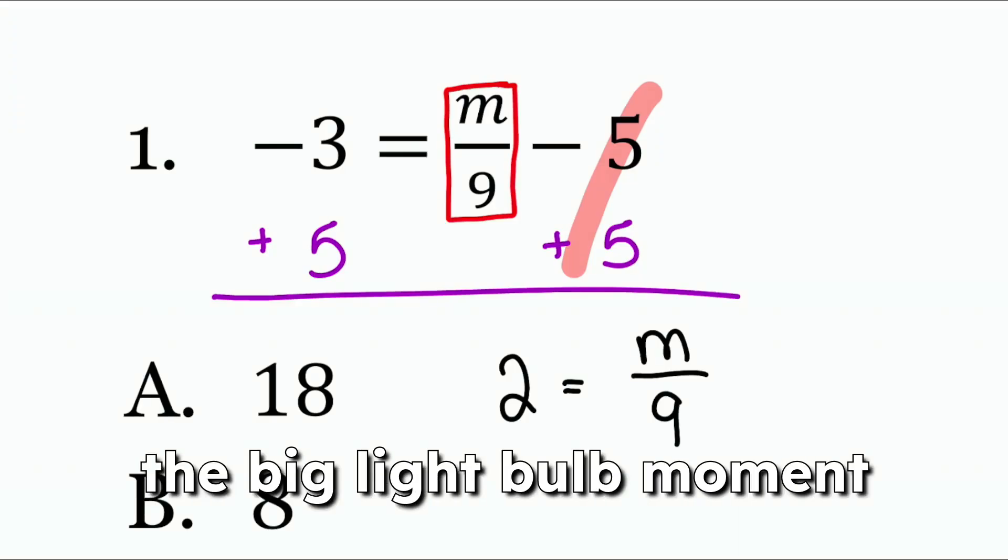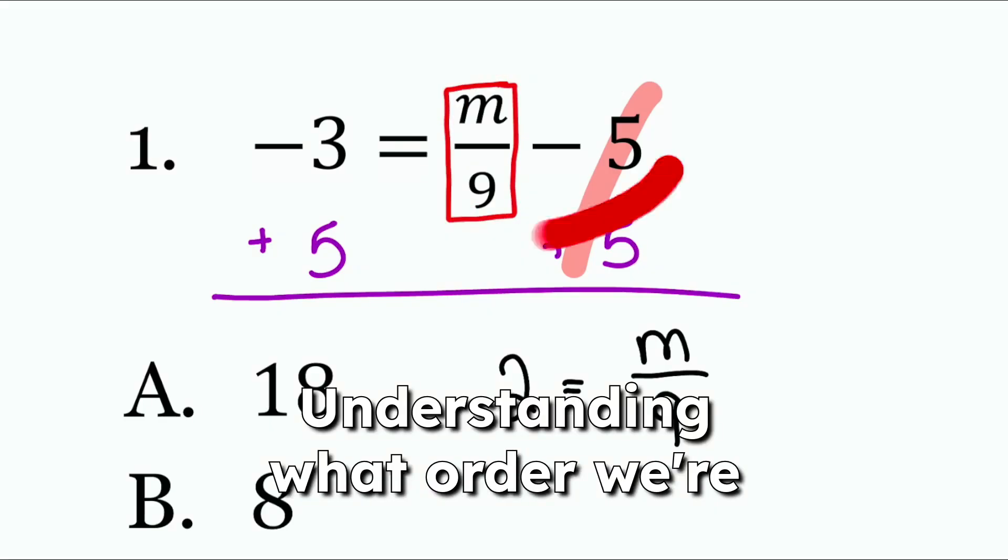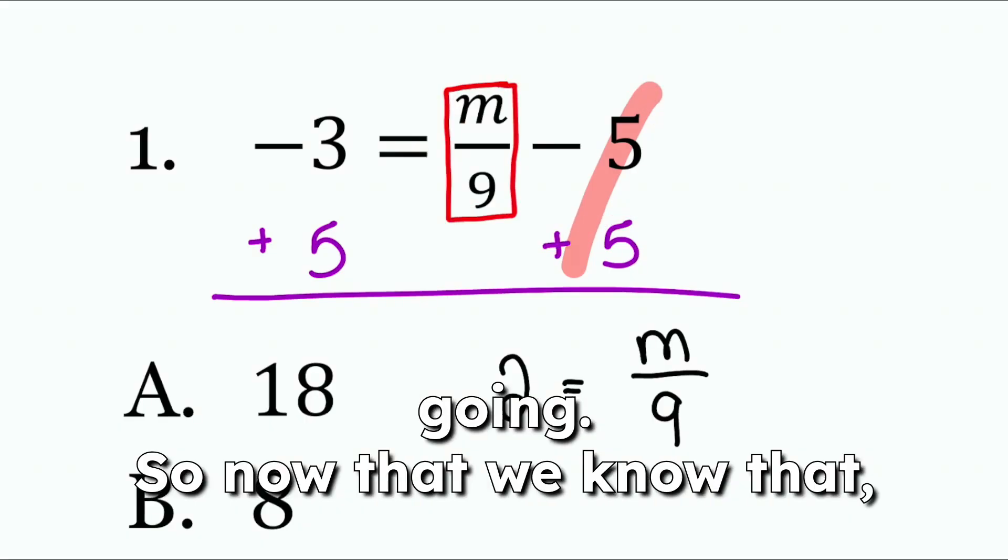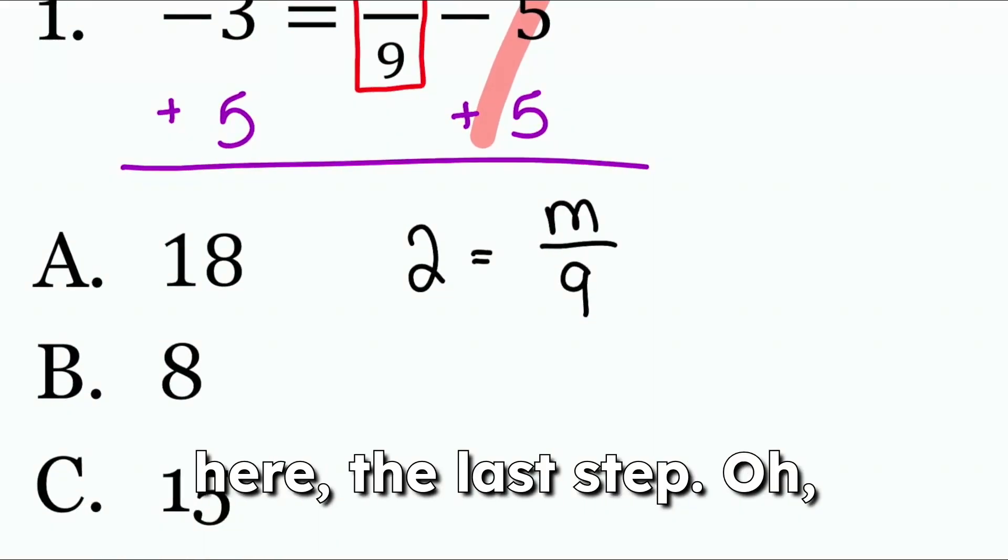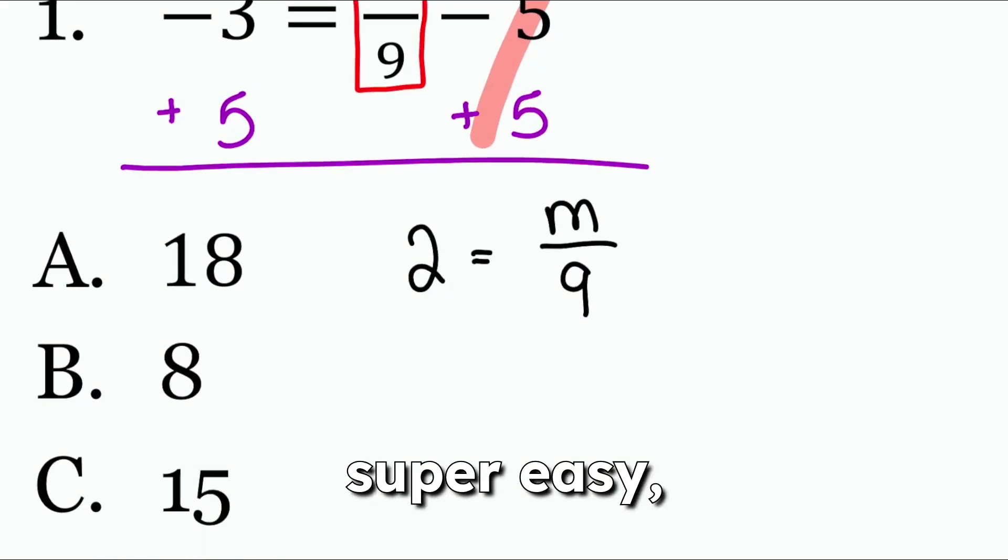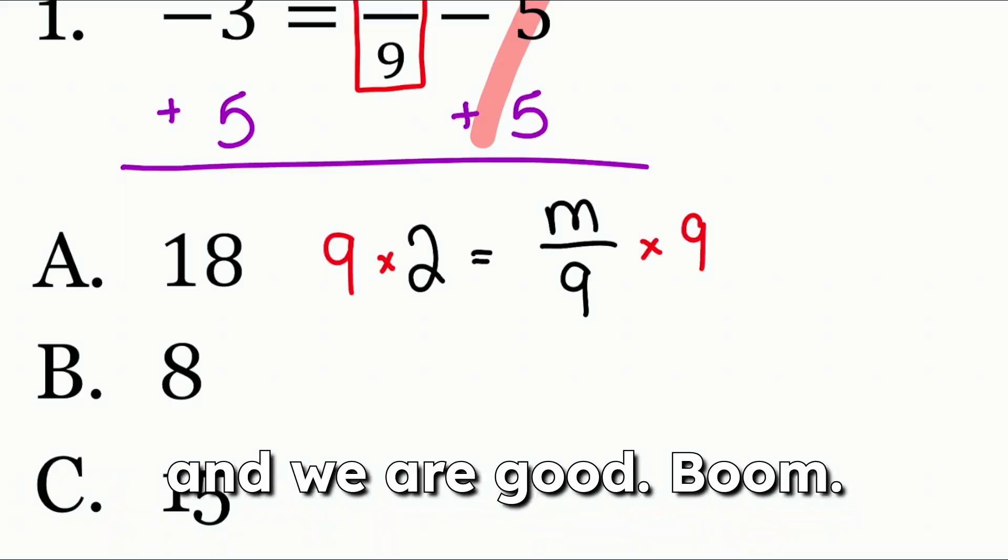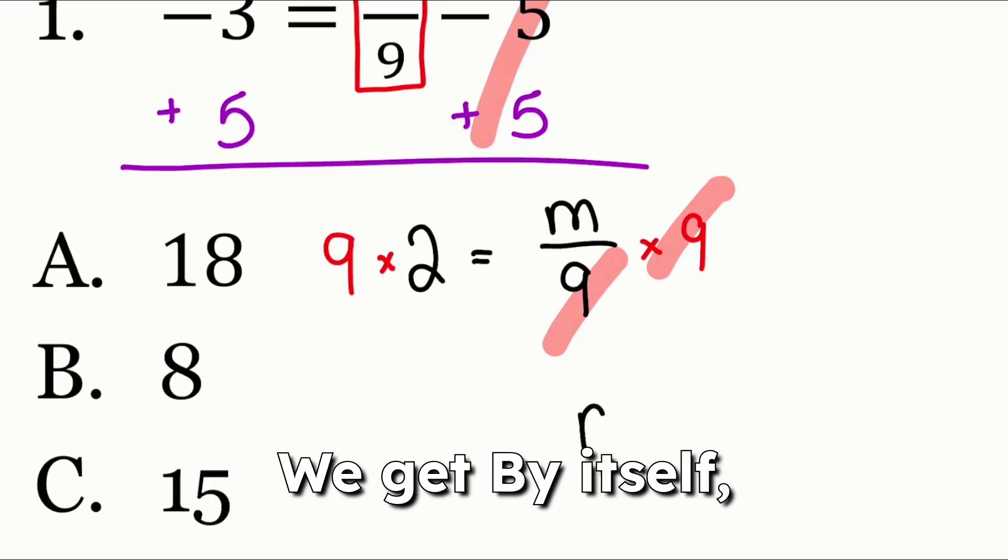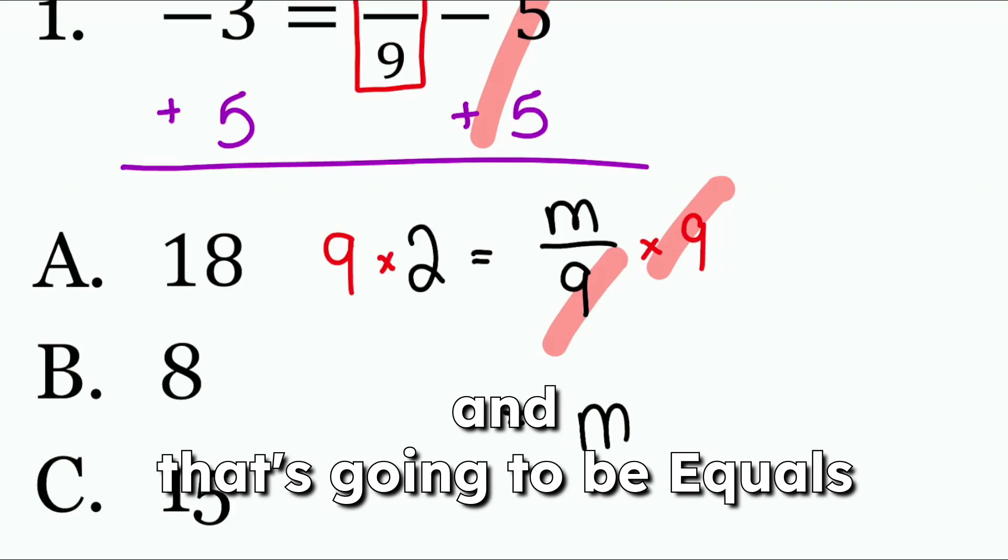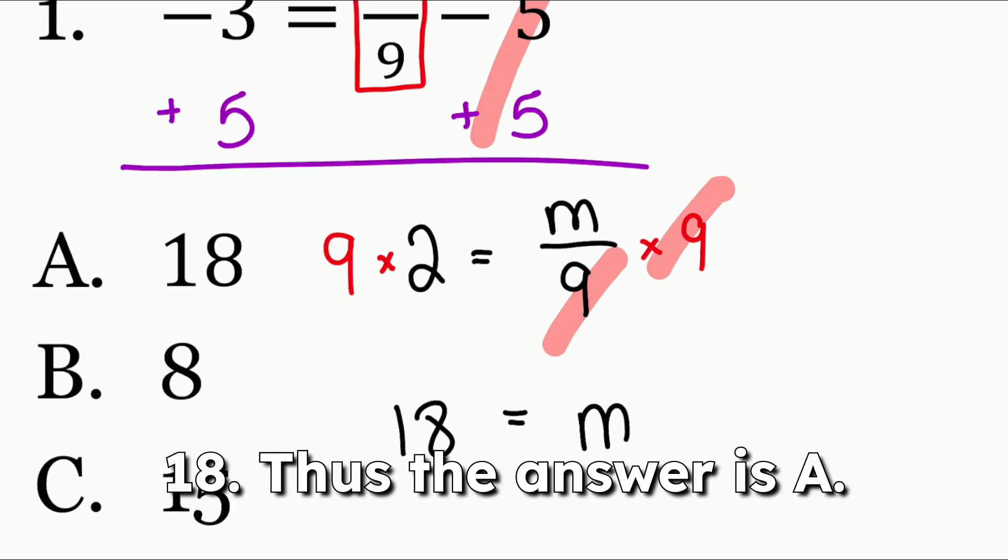I think for most of us the big light bulb moment came right here. Understanding what order we're going in. So now that we know that and we're at the second step here, the last step, oh super easy. Barely an inconvenience, multiply by 9 on both sides and we are good. Boom. We get M by itself and that's going to be M equals 18. Thus the answer is A.